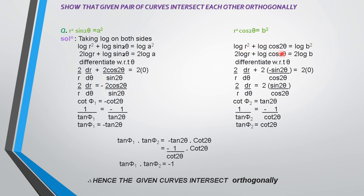Similarly, for the second curve: log r² + log cos2θ = log b². On further solution, 2 log r + log cos2θ = 2 log b. Then we differentiate, giving 2·(1/r)·(dr/dθ) plus